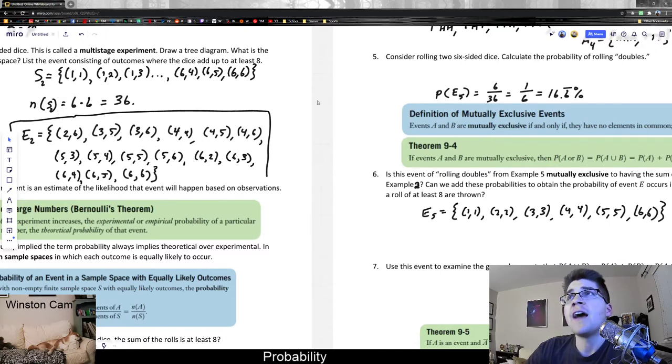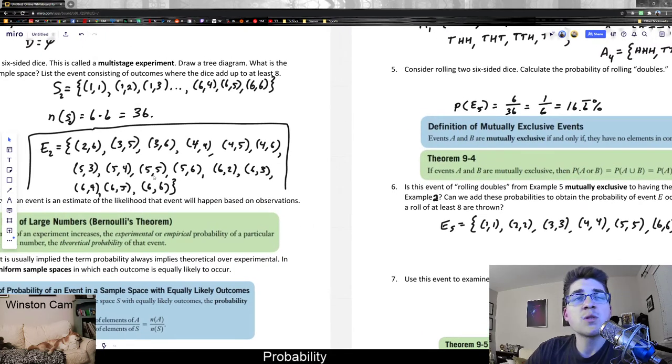And just to revisit E2, since it's been a couple videos, that was the list of outcomes where the sum of the dice rolls was at least eight. So 2, 6, 3, 5, all of those, as long as it's eight or more, it satisfies that condition.